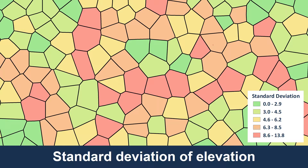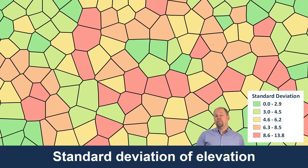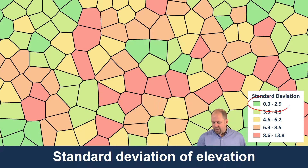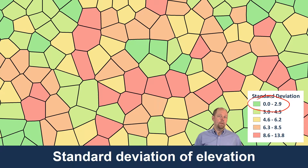One way we can do that is by looking at the standard deviation of the values. The whole idea is that we're using our sample points to estimate values where we don't have a sample point. We might be interested in whether there is a lot of variability within each polygon. If there's not much variability compared to our DEM, and the standard deviation values are low within each polygon, that's probably a good thing. If they're high, that means we're not capturing the variability that we might.